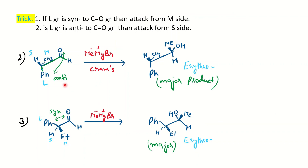In the first example we could not apply the trick directly because we were not able to find out the position of the large group — whether it is above or below the plane. If you cannot find out the position of the large group, you have to use the Newman projection. Otherwise, if you can determine whether the large group is anti or syn to the carbonyl group, you can apply the shortcut tricks.